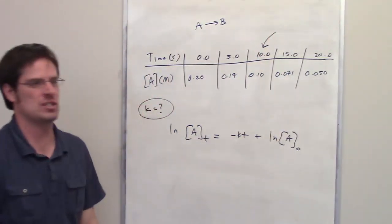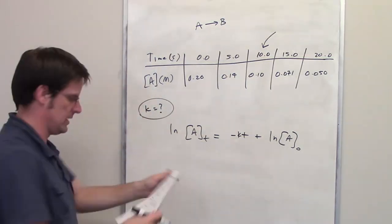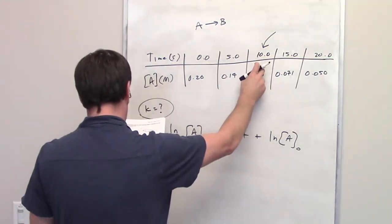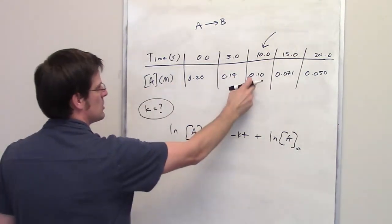I'm going to go ahead and pick T equals 10, but you can pick a different one and see if it gives you the same answer. So hopefully it actually does. So at T equals 10, what is the concentration of A? The concentration is 0.1.